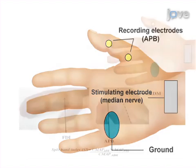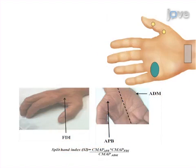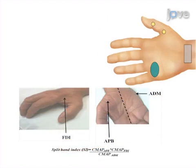Next, the product of the Compound Muscle Action Potential recorded for the APB and FDI is divided by the CMAP recorded for the ADM in order to obtain the Split Hand Index.